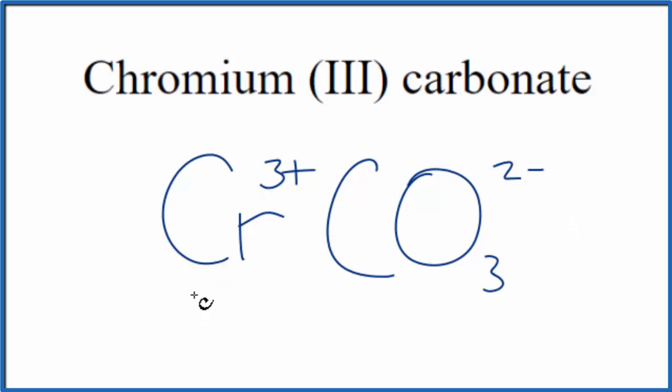So we have our chromium, which is a metal, and our group of nonmetals here, our carbonate ion. Because we have a metal and nonmetals, this is an ionic compound, and these charges here, they need to add up to 0 to give us a net charge of 0.